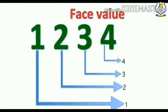Now you know that the face value of a digit is the value of the digit itself. What is the face value of each digit in 1234? The face value of 4 is 4, face value of 3 is 3, face value of 2 is 2, and the face value of 1 is 1. That means it remains the same all the time.